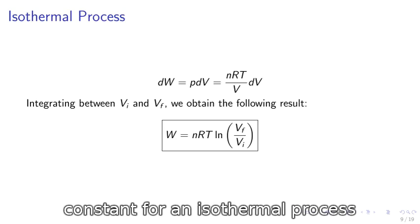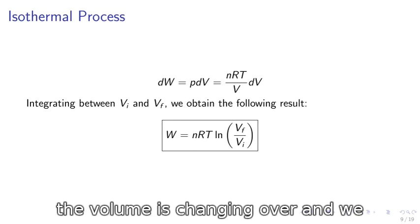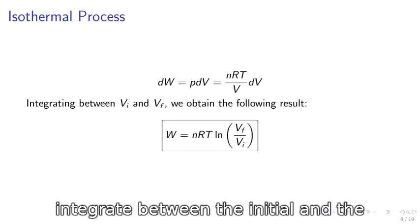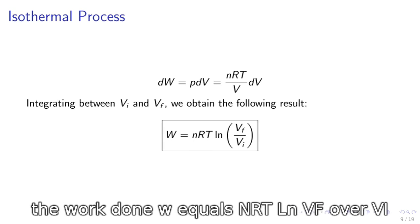For an isothermal process, temperature is constant. We may treat the volume as changing, however. And if we integrate between the initial and the final volume, we obtain the following result for the work done: W equals NRT LN VF over VI.